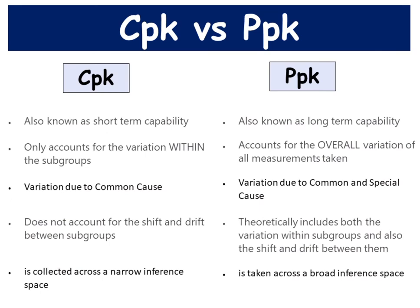What is the difference between CPK and PPK? CPK is known as short-term capability while PPK is long-term capability. CPK only accounts for the variation within the subgroups while PPK accounts for the overall variation of all measurements taken. Short-term capability consists of variation due to common cause while long-term capability consists of variation due to common and special cause. CPK does not account for the shift and drift between subgroups while PPK theoretically includes both the variation within subgroups and also the shift and drift between them. For short-term capability, data is collected across a narrow inference space while data from long-term capability is taken across a broad inference space.